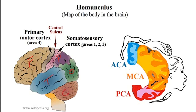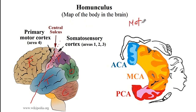The somatosensory cortex is located in the parietal lobe and this region is responsible for sensing sensations around the body. The motor cortex is located in the frontal lobe and is responsible for ordering the body parts to move. If you obtain a coronal view of this region, that is the view of the somatosensory as well as the motor cortex, and this is the homunculus — a map of the body in the brain — which tells you what regions of the brain control different parts of the body for both motor as well as sensory functions.